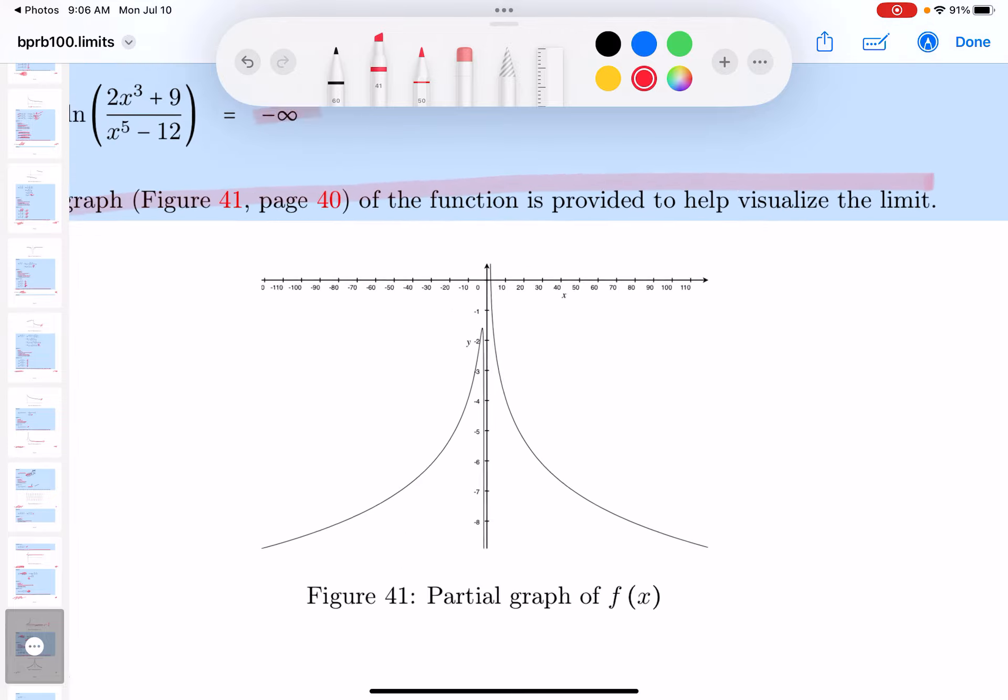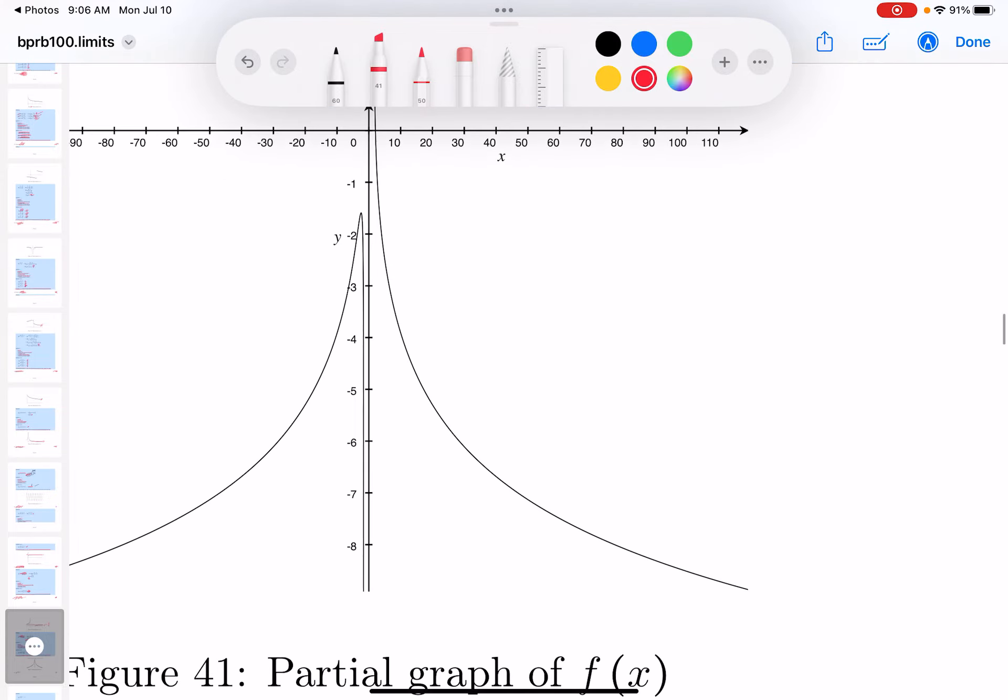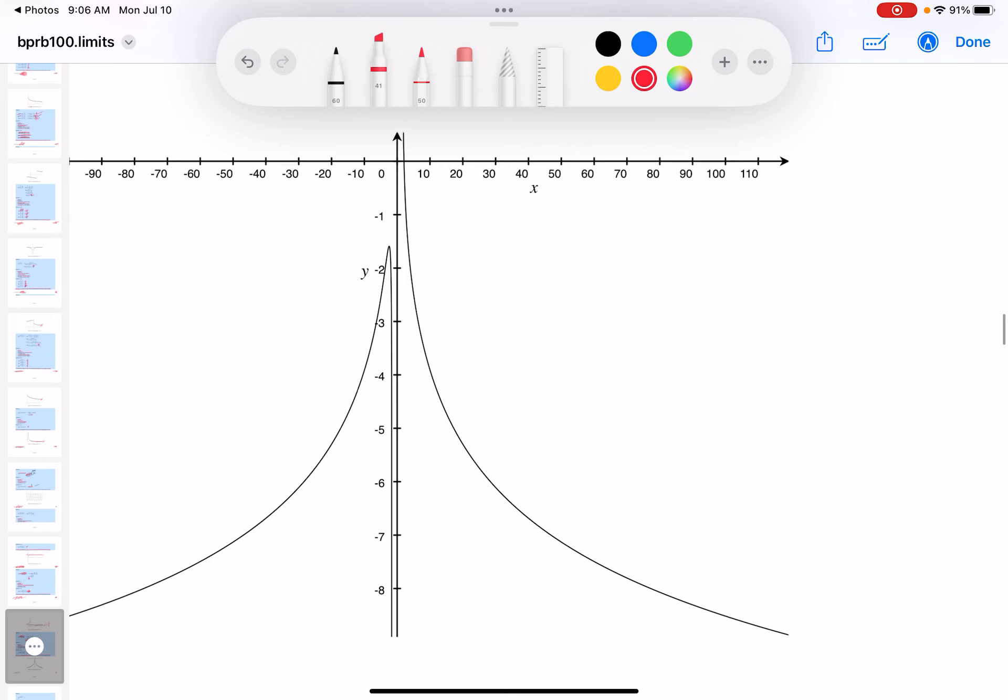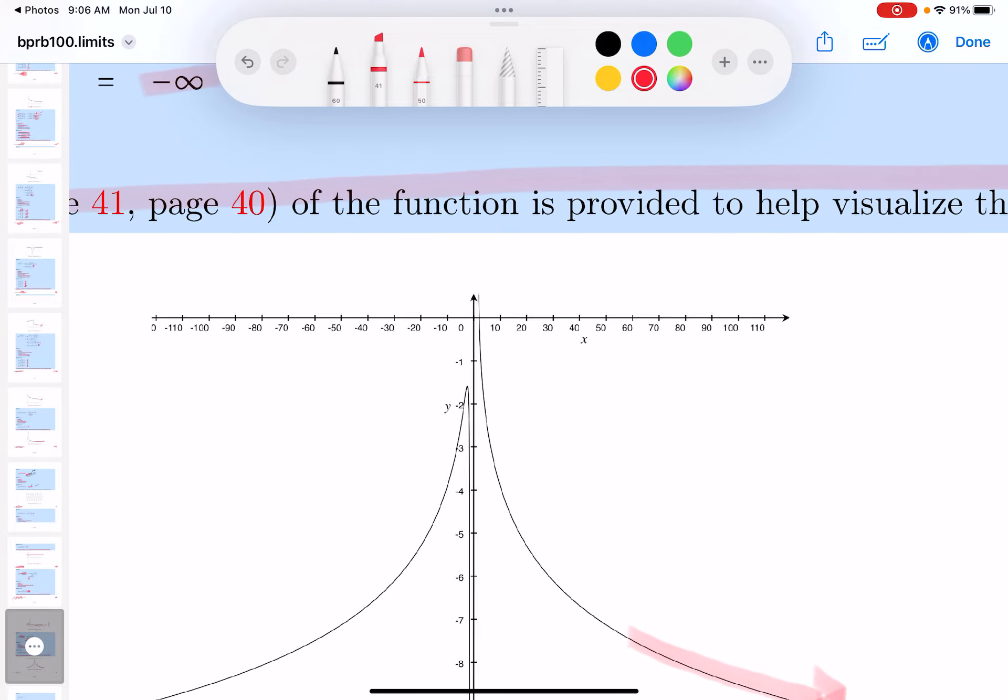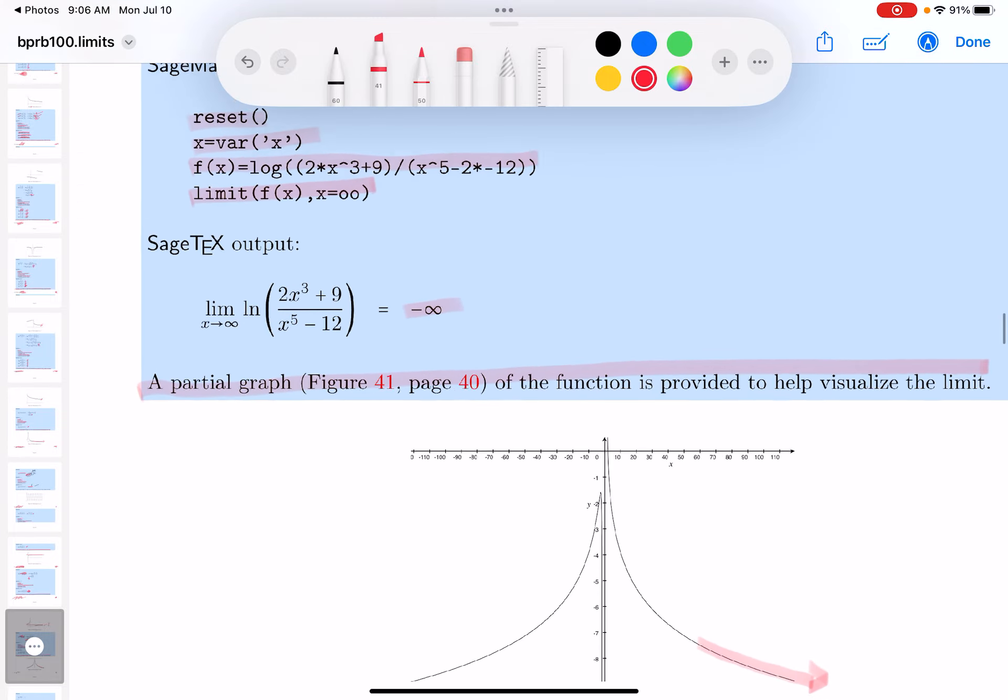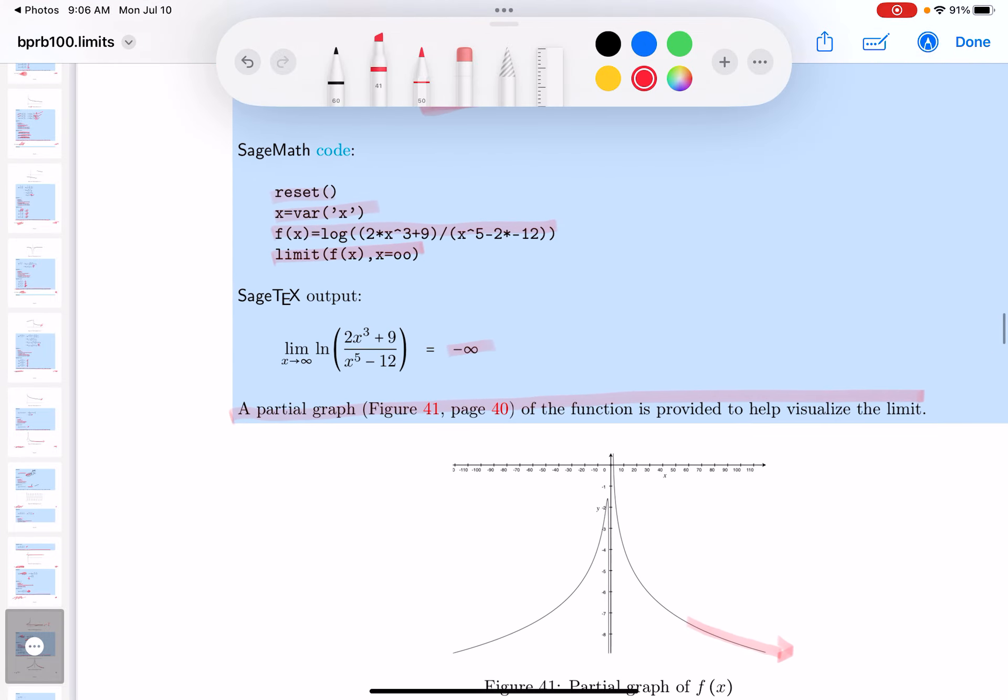...and looking at it, I want to blow this up a little bit. This would be hard to do by hand by the way, but I do realize this: as we go towards infinity, this thing seems to be sailing down towards minus infinity, and that's exactly what we're expecting to see. Thank you.